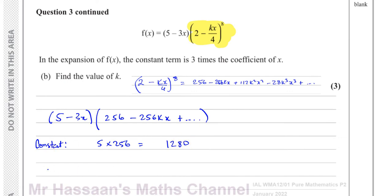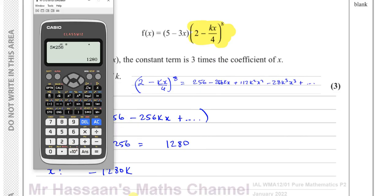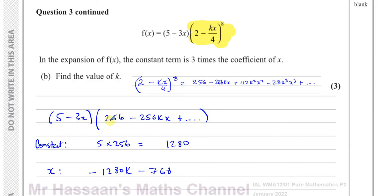The constant term is 1280. For the x term: it comes from 5 times (minus 256k), giving minus 1280k, and from minus 3x times 256, giving minus 768. All other combinations produce x² or higher terms, so I don't need to worry about them.